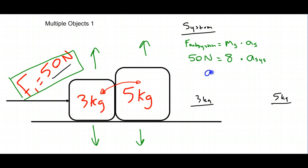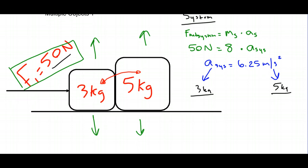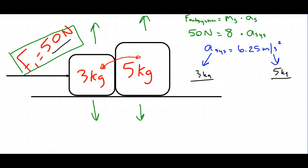Since we only have one unknown, it's easy to solve. The acceleration of the system equals 50 divided by 8, or 6.25 meters per second squared. And since the acceleration of the system equals the acceleration of each individual object, we can now find the rest of the information about them.